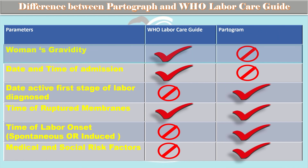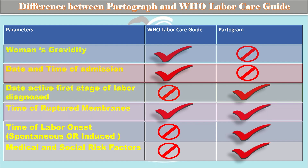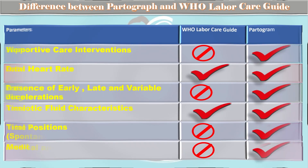The woman's gravidity, date, and time of admission are mentioned in the WHO Labor Care Guide but not in the partograph. In the WHO Labor Care Guide, the time of ruptured membranes is mentioned, but the date of the active first stage diagnosis, time of labor onset, and medical and social risk factors are not mentioned — while all of these are mentioned in the partograph.